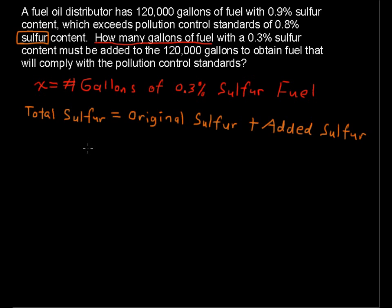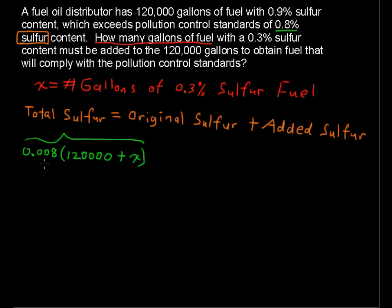The total sulfur is going to be 0.8%, because that's the standard we're going to meet. Now 0.8% as a decimal is 0.008, so 0.008 times the total amount of fuel — that's 120,000 gallons plus the amount that we are adding. So that's our total sulfur: 0.008 times the total amount of fuel, which is 120,000 plus x.